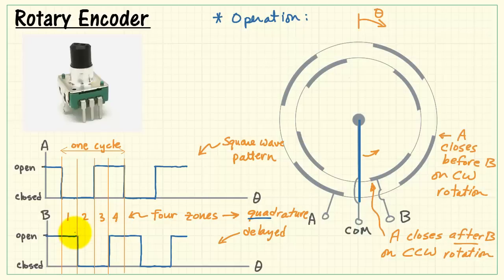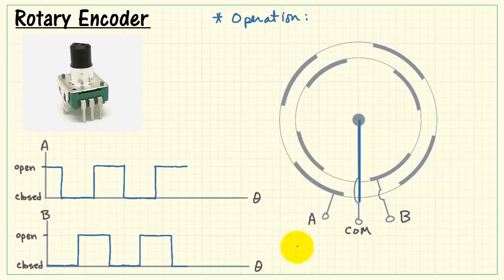That has the effect of advancing this square wave waveform. Instead of being delayed version of A, now we see that B is an advanced version of A. This is very useful because with this relative change between A and B, we can infer the direction of rotation of the knob as well.